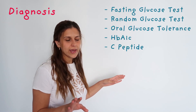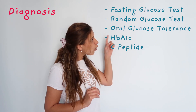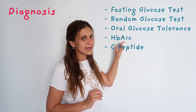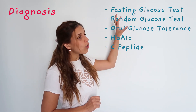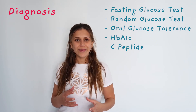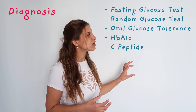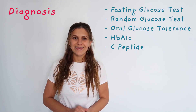Diagnosing diabetes can be done in a number of ways. For nursing students, you need to know the names of the tests: there is the fasting glucose test, random glucose test, oral glucose tolerance test, HbA1c, and the C-peptide test. These are all blood tests that determine the level of glucose within a patient's blood, and if the level of glucose is persistently high, the patient will be diagnosed with diabetes.